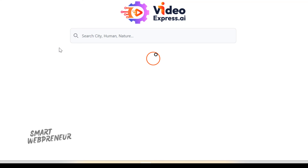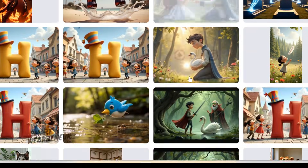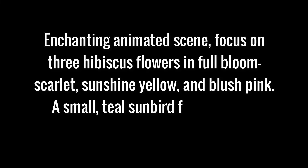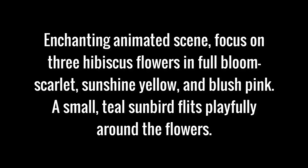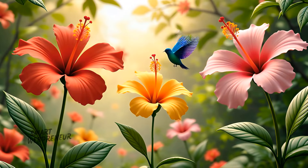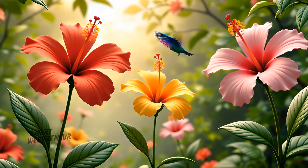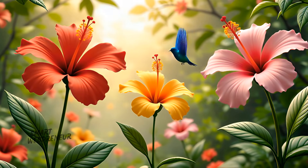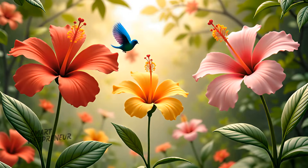The next example is inspired by the public library inside Video Express, which contains sample prompts and examples. The prompt I used was: enchanting animated scene, focus on three hibiscus flowers in full bloom — scarlet, sunshine yellow, and blush pink — a small teal sunbird flits playfully around the flowers. Pretty much exactly the way I wanted it to be. The colors are vibrant and true to life, the flowers look botanically accurate, and the sunbird's movement is natural and playful. The AI did a great job with the nature elements here.